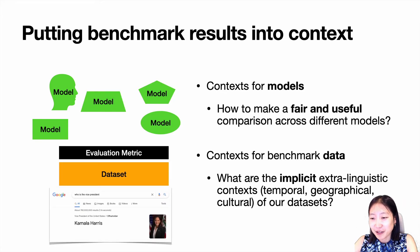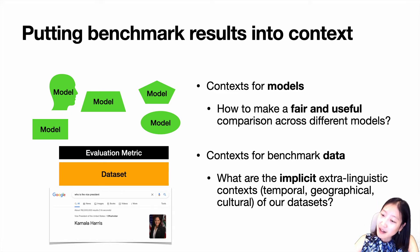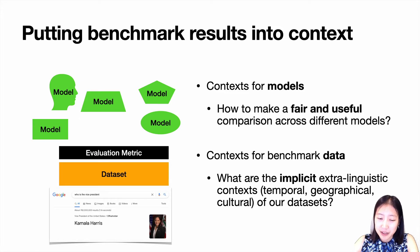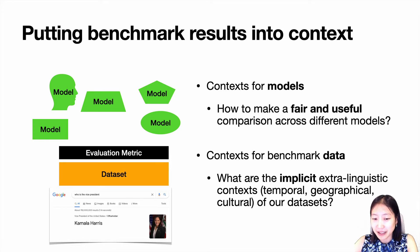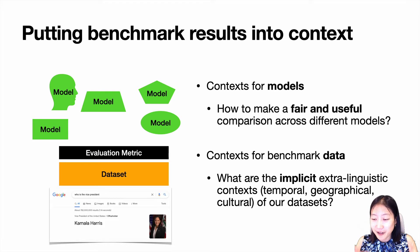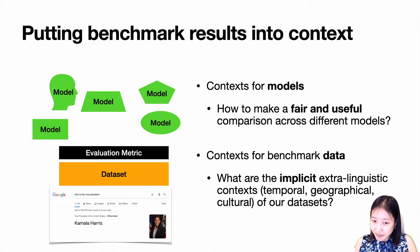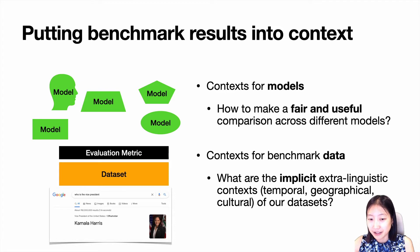In the second half of the talk, I'm going to discuss the context of benchmark data itself. Datasets make some implicit extra-linguistic context assumptions. For example, a QA dataset labeling who is the vice president with the answer Kamala Harris assumes we are in 2021 and geographically in the United States. I'll delve more into this issue of implicit extra-linguistic context assumptions.